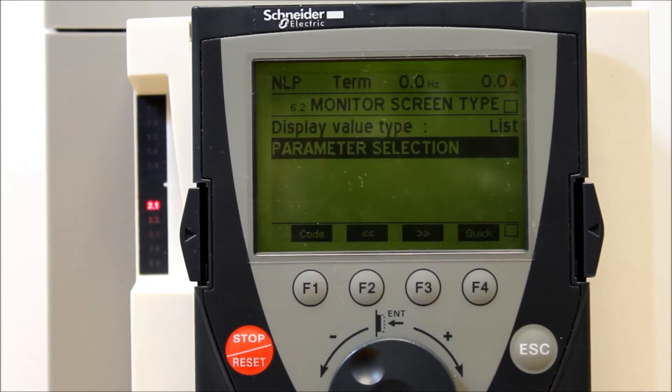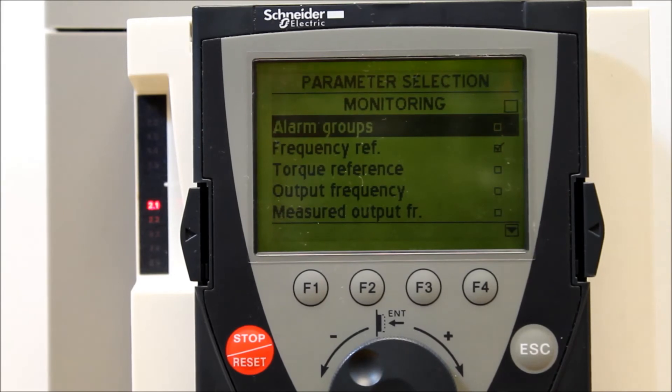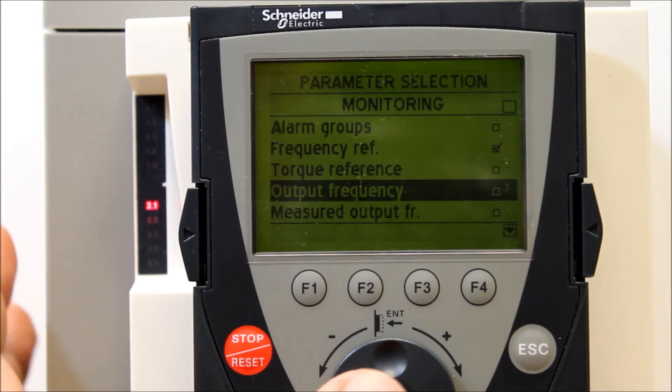Now to select the things that you want to see, you have to go into parameter selection tabs. Let's enter on that. And like I mentioned before, your frequency reference is already checked off. So let's go ahead and use output frequency.